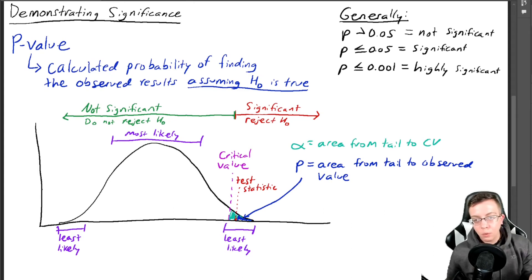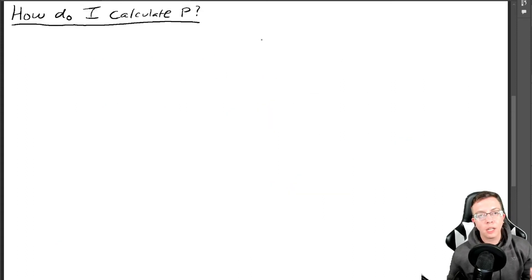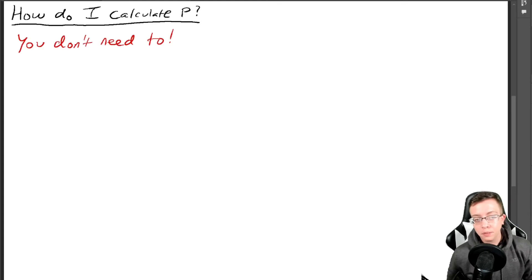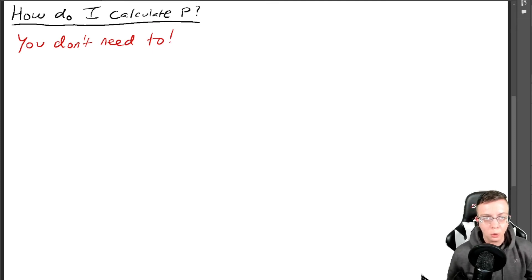We're going to talk about how we get the p-value, and this will come up more in later videos because each different test has a slightly different way of getting it. So how do I calculate p? If you can't do the math, there's good news: you don't need to. Somebody else did it for you and made a handy table. Depending on what test you're doing, there is a table and you can look up your p-value based on your test statistic. But there are some things you need to know to use the table properly.